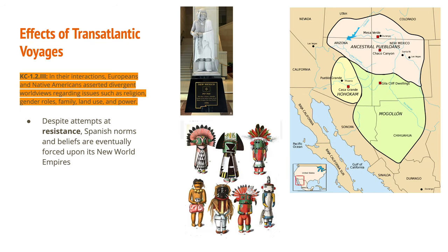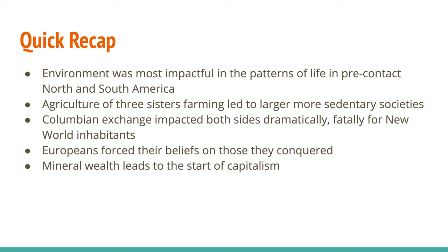Key concept 1.2, Roman numeral 3: in their interactions, Europeans and Native Americans asserted divergent worldviews regarding issues such as religion, gender roles, family, land use, and power. We saw how these interactions between the Spanish and natives sometimes caused the natives to assert their sovereignty and try to repel Spanish attacks. The Spanish norms and beliefs were eventually forced upon New World empires, but there was some resistance.